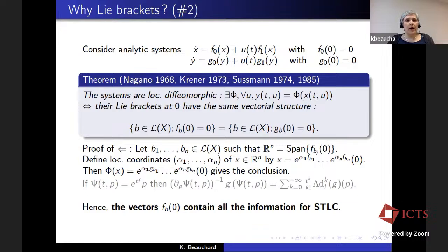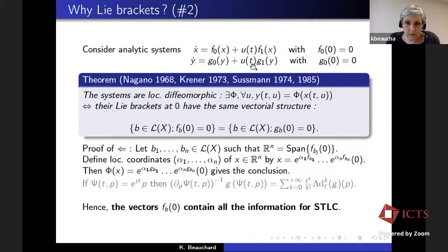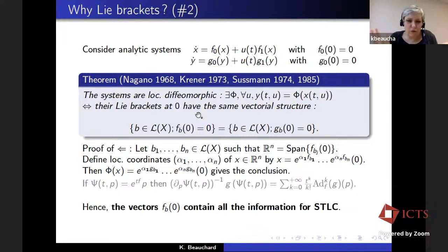Another reason why we look for conditions formulated in terms of Lie brackets is a very fundamental result proved by Krenner. If you consider two affine control systems with the same control, the trajectories of the first one are diffeomorphic to the trajectories of the second one if and only if the evaluation at zero of their Lie brackets have the same vectorial structure — meaning the same kernel, i.e., the set of Lie brackets that vanish at zero for F are the same as those that vanish for G.